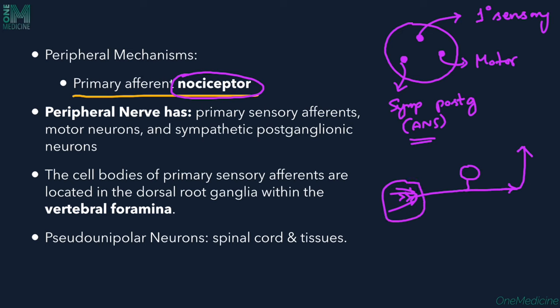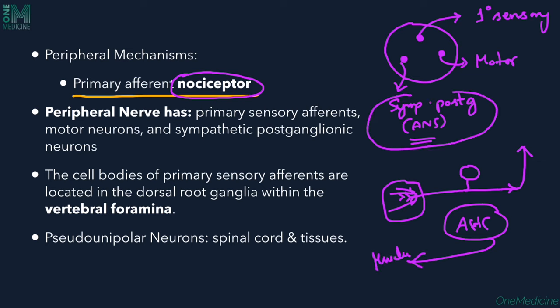The motor neuron has its cell body in the anterior horn cell of the spinal cord, from where it innervates the muscle. The sympathetic post-ganglionic neurons form part of the autonomic nervous system and innervate various structures.